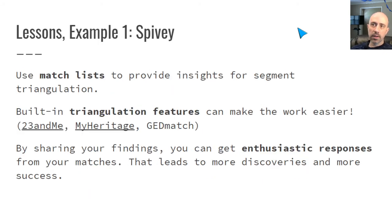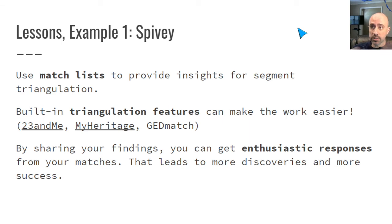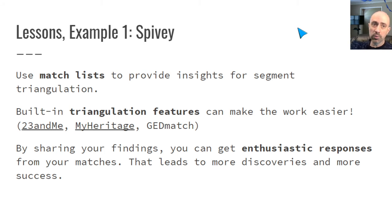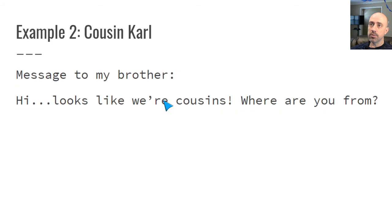Match lists get us started with segment triangulation — match lists are part of the process. I prefer segment triangulation, but match lists, particularly at 23andMe and MyHeritage where automated tools combine the power of match lists with triangulation, make things really easy to do sometimes. And remember: if you do some work and push this forward as far as you can before you reach out to your matches, you can get some really enthusiastic responses.